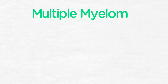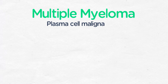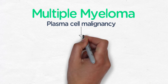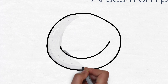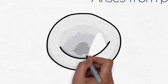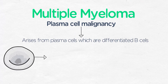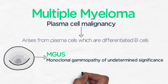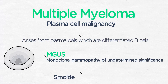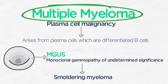Multiple myeloma is a plasma cell malignancy, so it arises from plasma cells, which are terminally differentiated B cells. It starts with an early precursor condition called MGUS, monoclonal gammopathy of undetermined significance, and then it can progress to smoldering myeloma, and then to overt or symptomatic multiple myeloma.